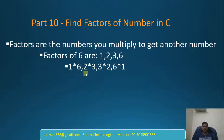Here, 1, 2, 3, and 6 are factors of 6. In another way, if the number is divided by other numbers, then those numbers are factors. Here, 6 is divided by 1, 2, 3, and 6, so these are the factors of 6. But 6 is not divided by 4 and 5, so 4 and 5 are not factors of 6.